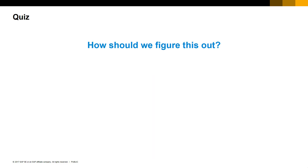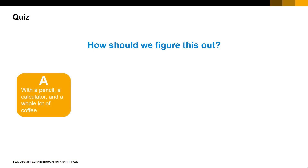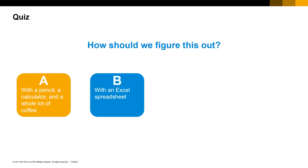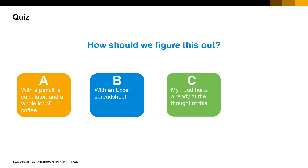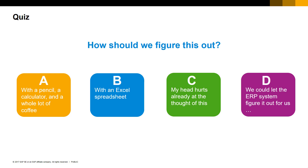Let's do a quiz. If I asked you how should we figure this out, would you say: A — with a pencil, a calculator, and a whole lot of coffee; B — with an Excel spreadsheet; C — my head hurts already at the thought of this; or D — we could let the ERP system figure it out for us? And the answer is D. Yes, absolutely we should let the ERP system figure this out for us.